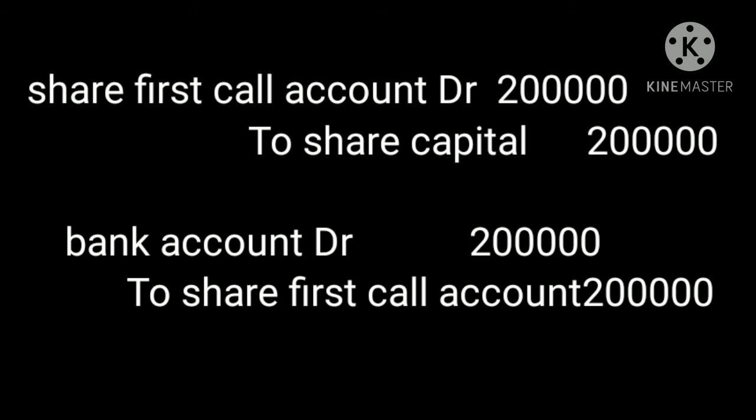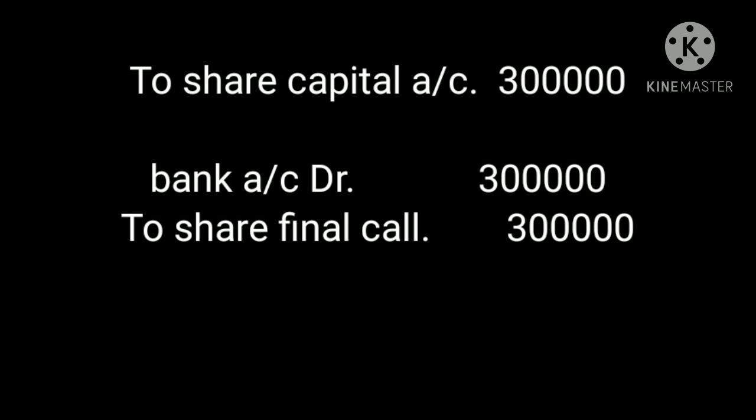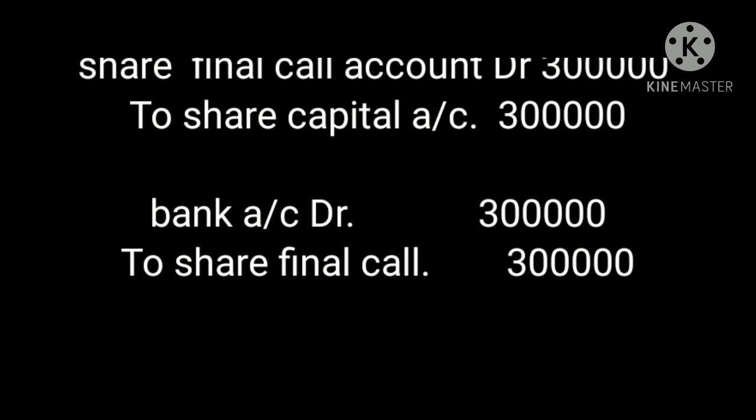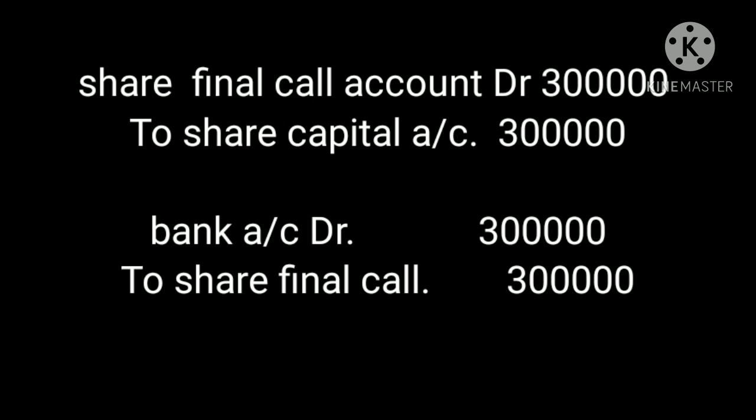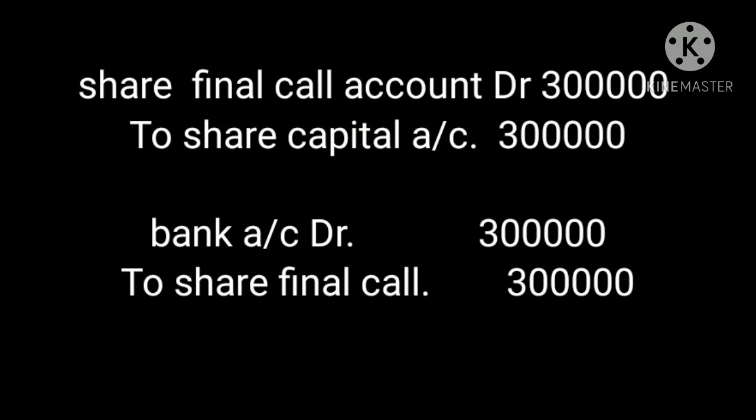The balance amount of 30 rupees is received as final call. Journal entry when final call is due: Final Call Account Dr to Share Capital Account. Amount is 10,000 into 30 equals 3 lakh. On receipt of final call money: Bank Account Dr to Share Final Call Account, amount 3 lakh — that is 10,000 into 30 as final call money received by the company.